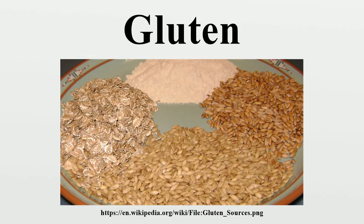People can also experience adverse effects of wheat as a result of a wheat allergy. A wheat allergy causes the immune system to abnormally respond to a component of wheat that it treats as a threatening foreign body; this immune response is often time-limited and does not cause lasting harm to body tissues. Wheat allergy and celiac disease are different disorders, though their gastrointestinal symptoms are similar. An allergic reaction to wheat has a fast onset after the consumption of food containing wheat and could include anaphylaxis.